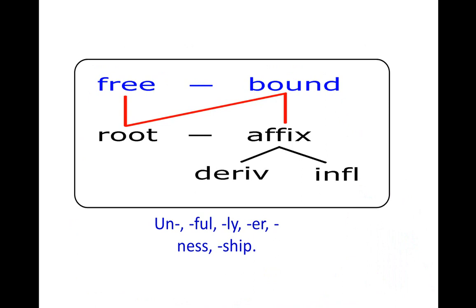Here is a chart representing what we are studying: when we speak about roots, we discuss free and bound. Free roots can occur alone with their own meaning. Bound roots are affixes or parts of words that need to combine with another part to have realization. These affixes are divided into derivation and inflection. In blue, affixes corresponding to the derivation process include 'un-,' '-ful,' '-ly,' '-ness,' '-ship.'